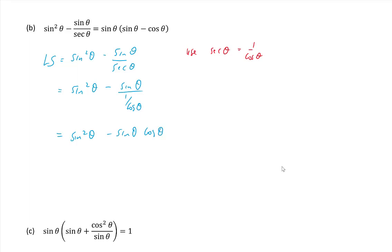We can take out a common factor of sinθ, and we're left with sinθ(1 minus cosθ). And notice that's equal to the right side, so we're done. I only needed one identity for this example.